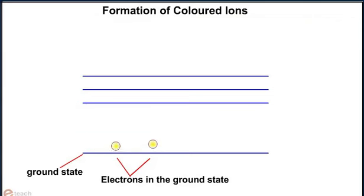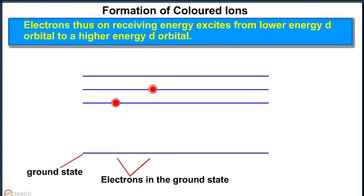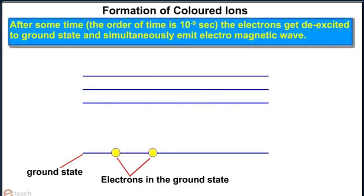Electrons thus on receiving energy excite from lower energy d orbital to a higher energy d orbital. After some time, when the order of time is 10 to the power minus 9 seconds, the electrons get de-excited to ground state and simultaneously emit electromagnetic wave.